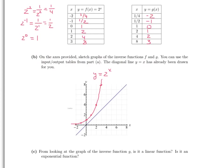Now let's sketch a graph of the inverse function using the input-output pairs from our table. When x is 1 fourth, y is negative 2. Then 1 half comma negative 1, 1 comma 0, 2 comma 1, 4 comma 2, and 8 comma 3. Plotting these points, I arrive at a curve — this is the graph of the inverse function g of x.